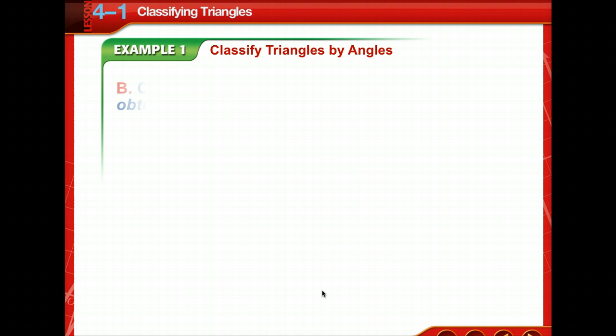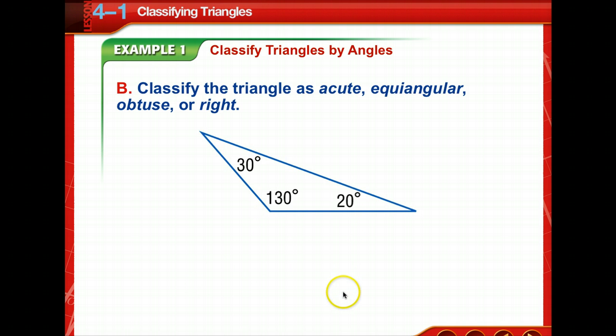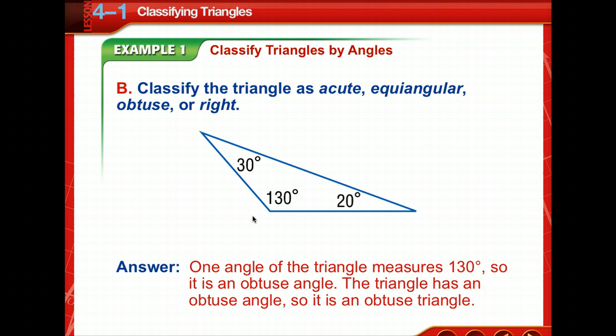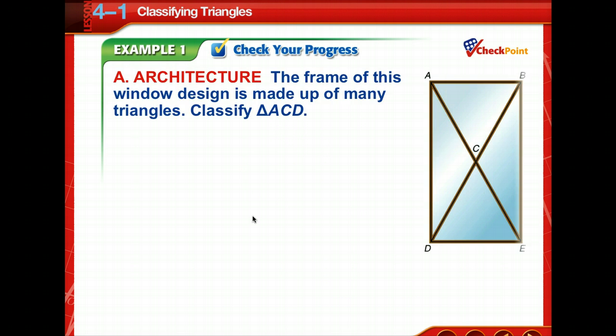Let's try another one. We're to classify this triangle as acute, equilangular, obtuse, or right. Notice it has two acute angles, which all triangles do, but there's one that's above 90 degrees. That's an obtuse angle. So, this one can be classified as an obtuse triangle. Very good. All right, that was pretty easy. Let's take time to check your progress. So, pause the video and read this problem, then come back and check your answer.